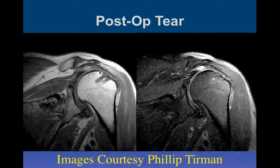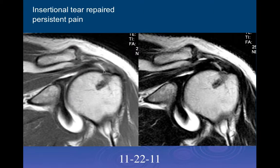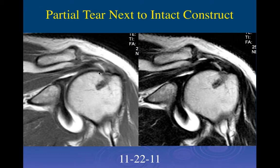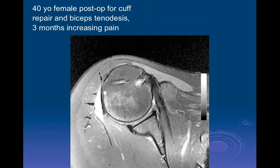Here's another breakdown—a tear of a double-row technique. And here's a 40-year-old female post-op for cuff repair and biceps tenodesis at three months with increasing pain.